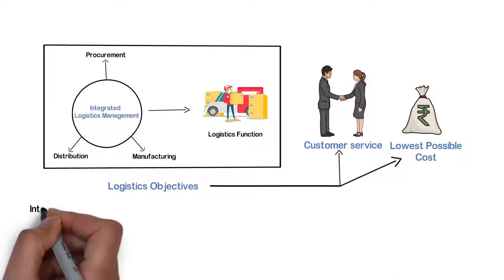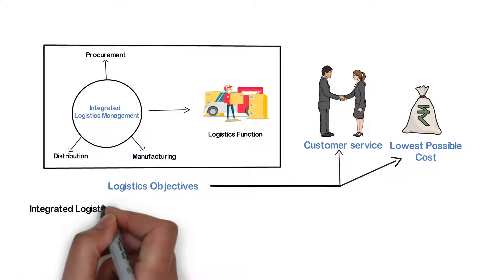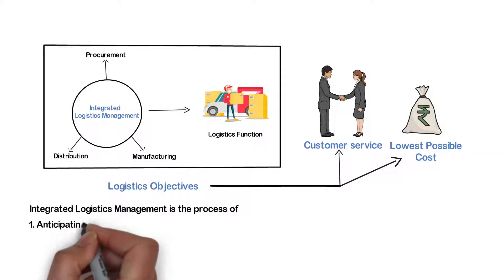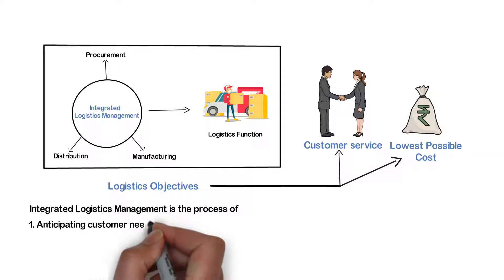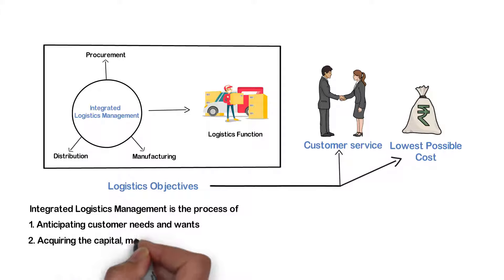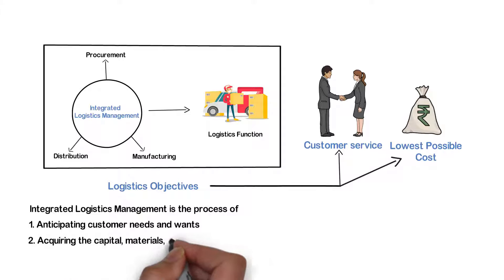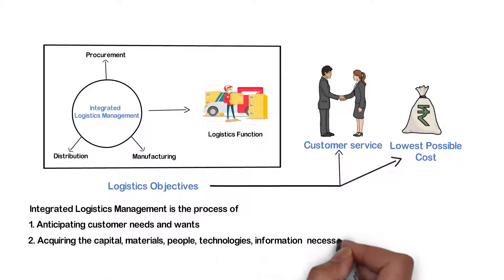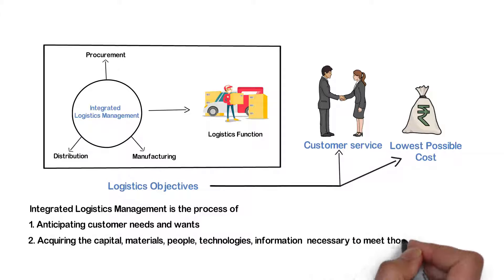Integrated Logistics Management is the process of anticipating customer needs and wants, acquiring the capital, materials, people, technologies and information necessary to meet these requirements and the wants of the customer.